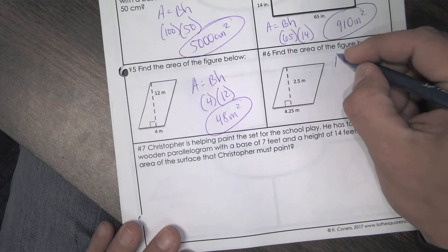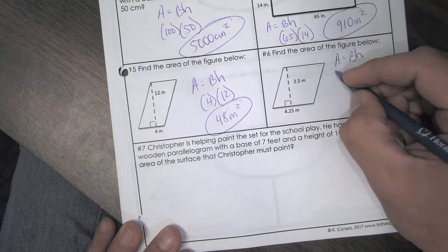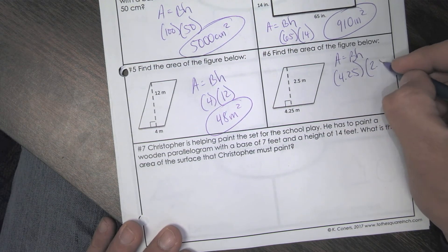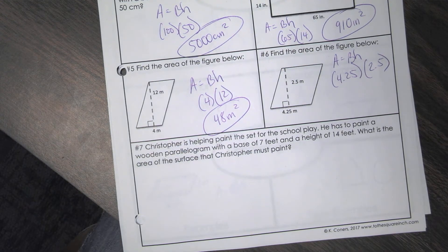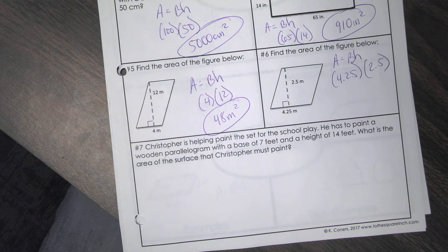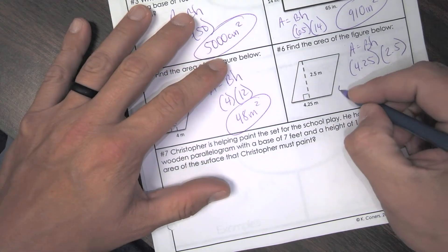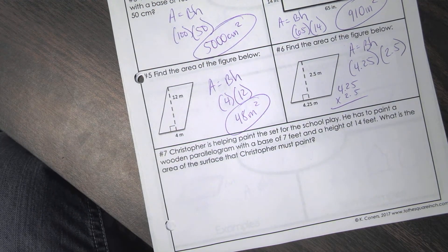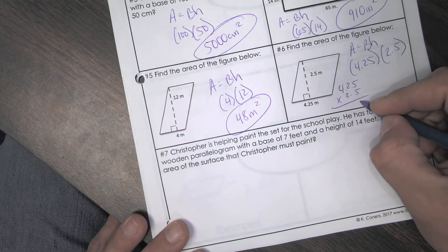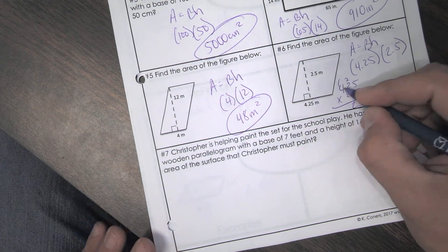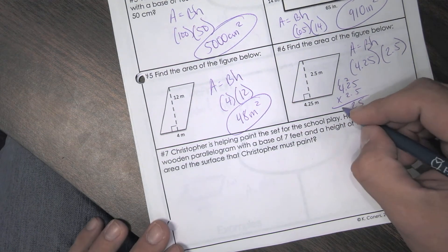Number six is still the same thing. You're still just multiplying this out. So our base would be 4.25 and our height is 2 and a half. So when you multiply this out, what's the area, Austin? You're close. Not quite. So when we multiply this out. Remember, decimals have nothing to do with the actual multiplication. They don't come in until the very end. So 5 times 5 is 25. 5 times 2? Plus 2. 12. 5 times 4? Plus 1. 21.